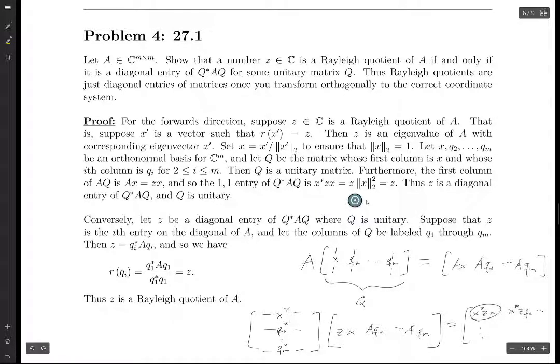And X star X is the dot product of X with itself, which is the 2 norm squared. And the 2 norm is 1, so the 2 norm squared is 1, and so we just end up with Z. So the 1, 1 entry of this matrix is Z, and thus Z is a diagonal entry of Q star AQ. And of course, Q is a unitary matrix.